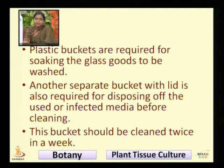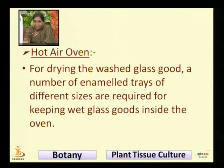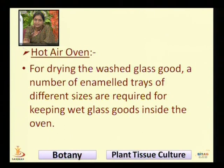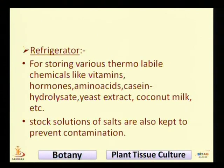This bucket should be cleaned twice a week. The second item is the hot air oven, which we use for drying washed glassware. A number of enamel trays of different sizes are required for keeping wet glass goods inside the oven. Next is the refrigerator, used for storing various thermolabile chemicals.